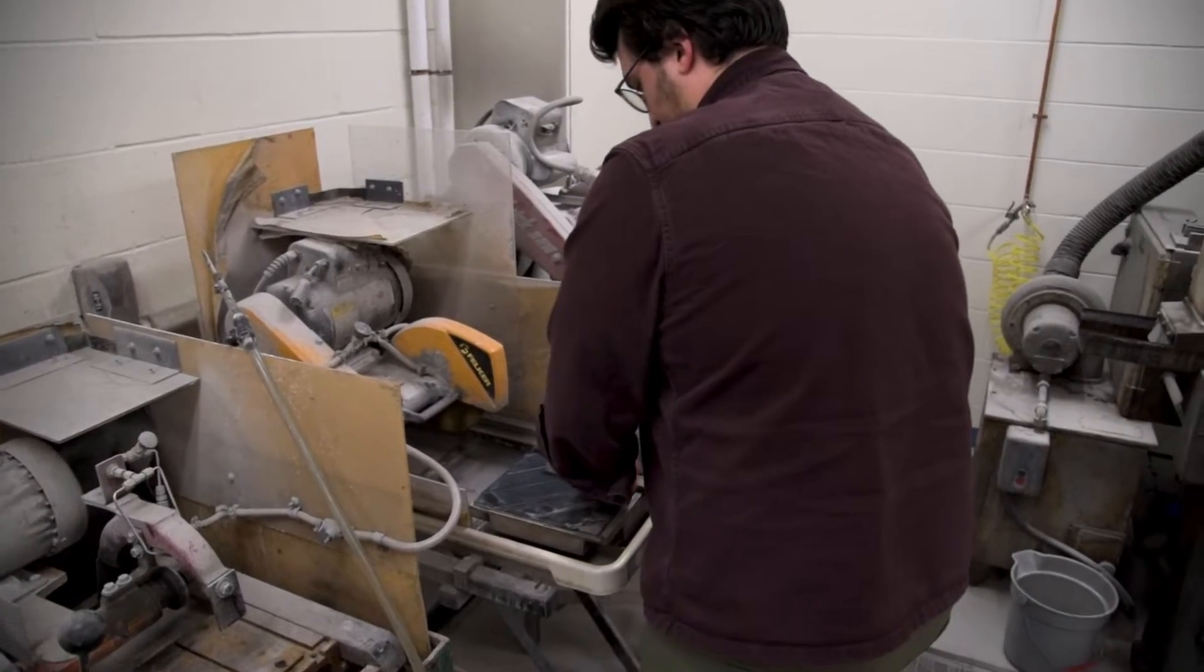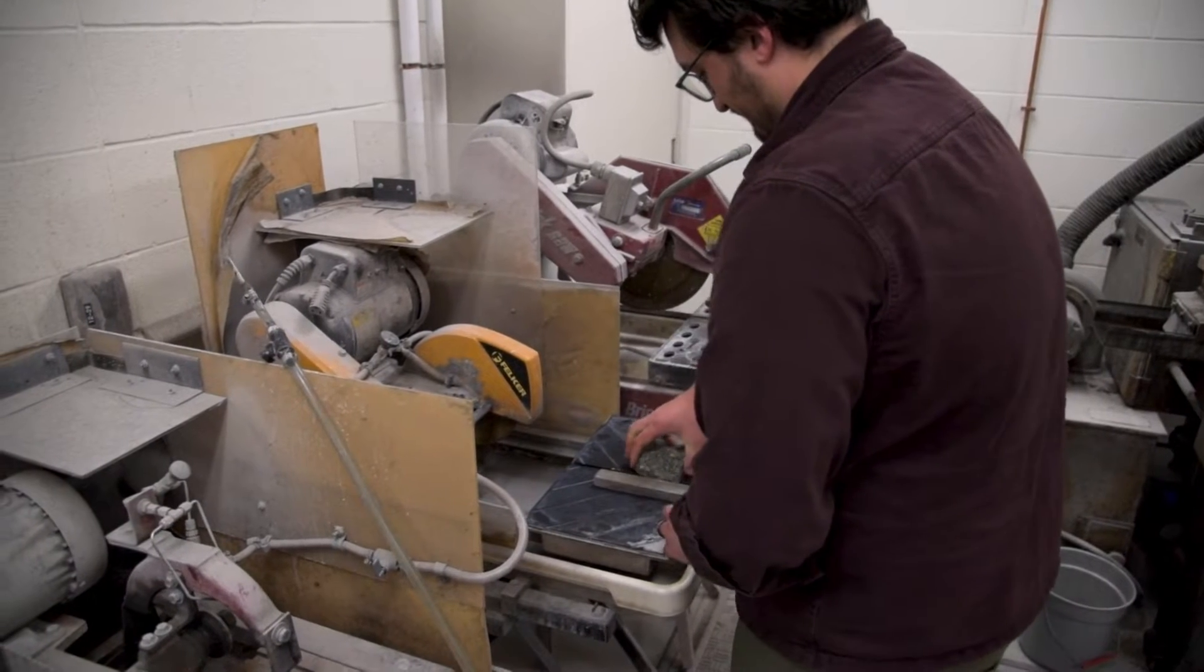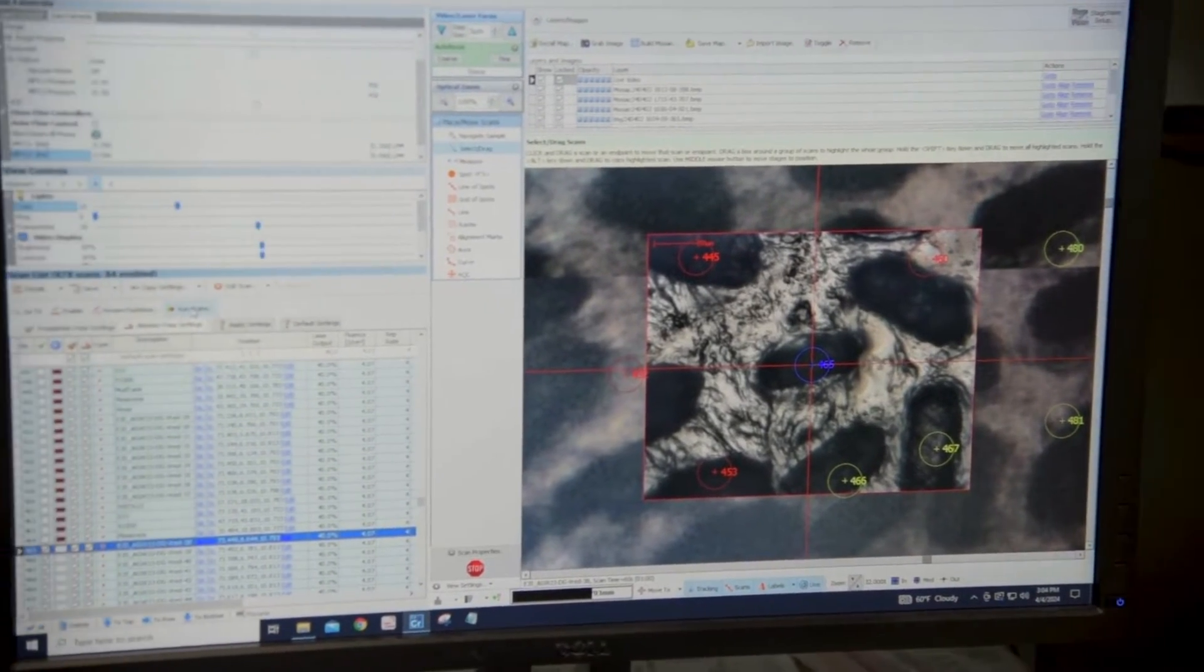Meanwhile, zircon is an excellent recorder of the primary age of rocks before they were overprinted. The team then used this new information to model the volume of the Earth's continental crust over geological time.